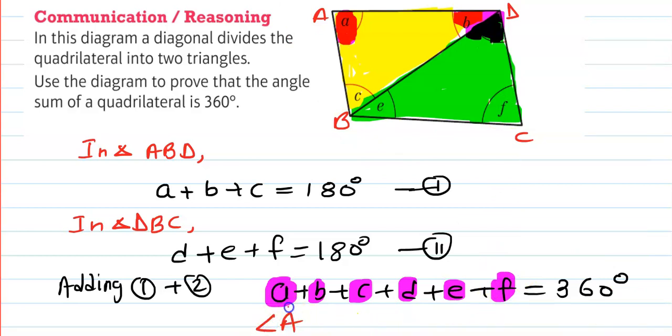A is angle A. B plus D—in this place B plus D you can write down angle D. C plus E—in place of C plus E you can write down angle B. And for F you can write down angle C. And if you add them, then it should be 360 degrees.